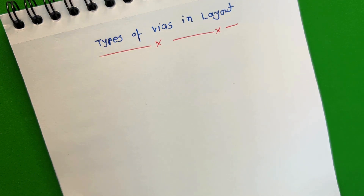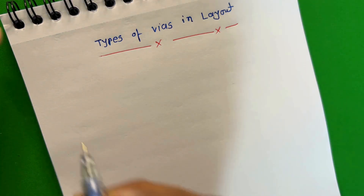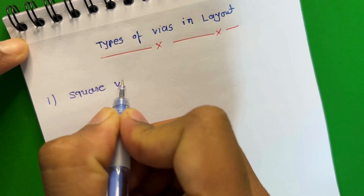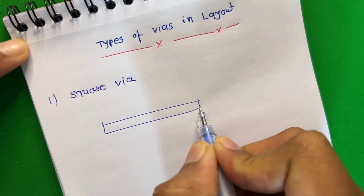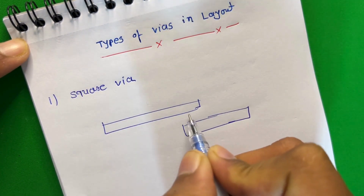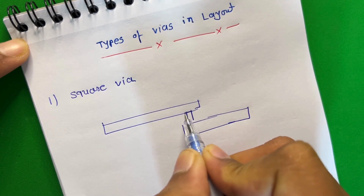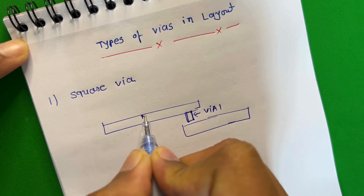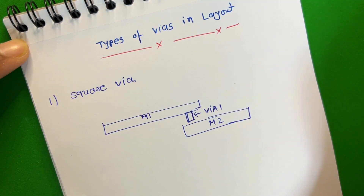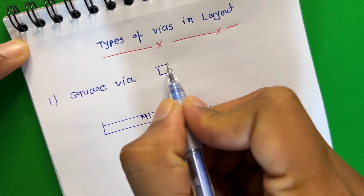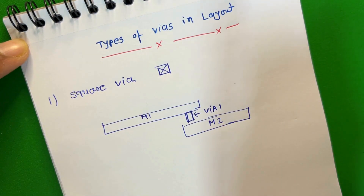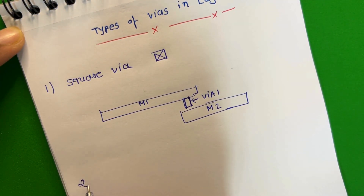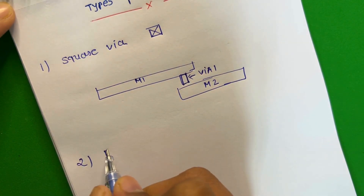So this is the connection between metal one and metal two, like lower metal to higher metal. The first wire type we are using here is a square wire. Let's assume this is metal one and this is metal two — for that we are using a square wire. This is the cross section: wire one, metal one, metal two. So the first type is a square wire, also called a single wire. If the overlay is small, we are using a single wire.